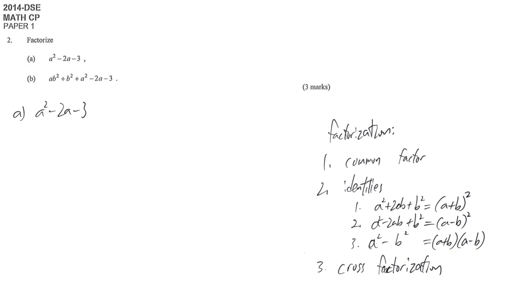For factorization, a very important thing is to follow this order. We have to check if there is any common factor, and then if not, we check if there is an identity format. If not, then we use the last result which is cross factorization.